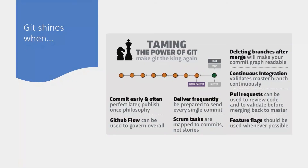Git is very powerful and it shines when you abide by certain principles. For example, commit early and often rather than accumulating changes. Use a proper branching model that works for your team — for example, GitHub Flow if you're shipping often, or Git Flow if you're driven by a release model.